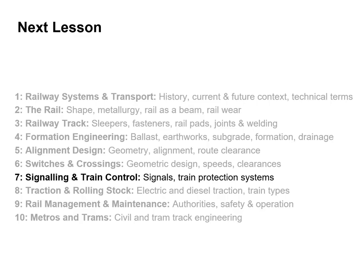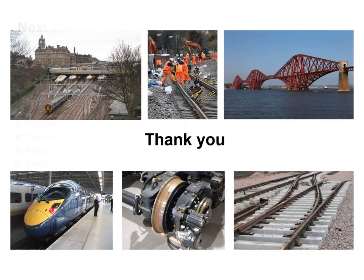That's the end of the lecture for Unit 6. You now have to look at the tutorial questions, additional reading and some of the additional tasks in the virtual learning environment. The next unit is going to be Unit 7, Signalling and Train Control, where we're going to look at signalling systems and train protection systems. Thanks for listening. Bye for now.